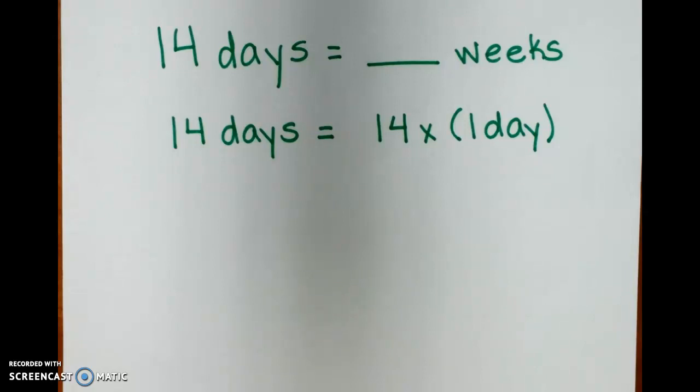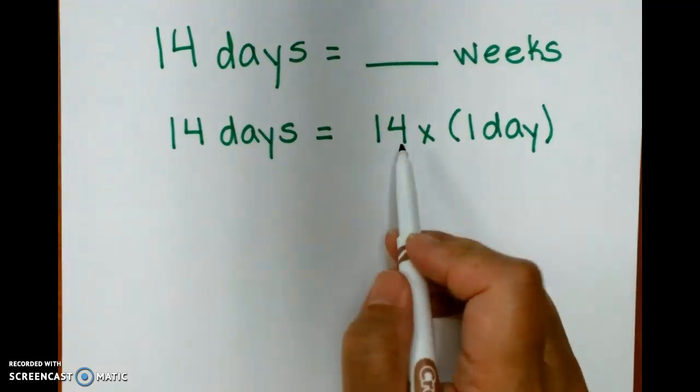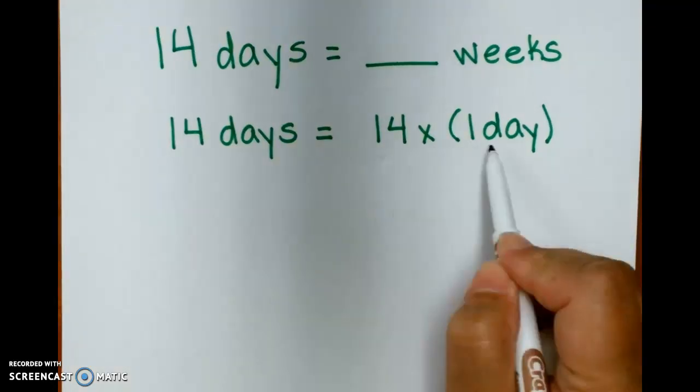Okay, so if we have 14 days, and we want to figure out how many weeks that is, but we don't want to divide, we want to multiply. We're going to have to figure out what fraction of a week one day is. So I have 14 days equals blank weeks. I have 14 days equals 14 times one day, and our two factors are going to be 14 and one day.